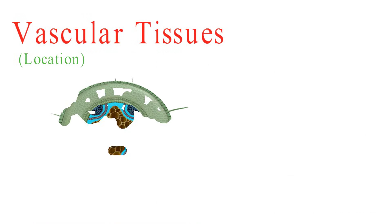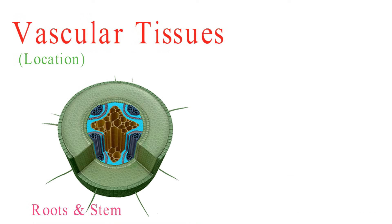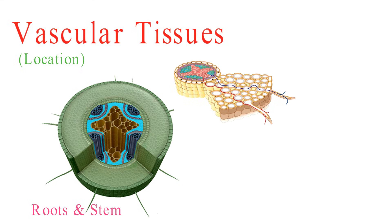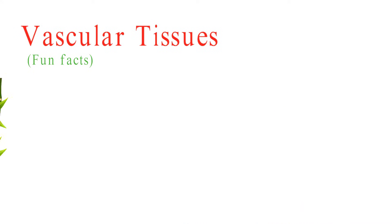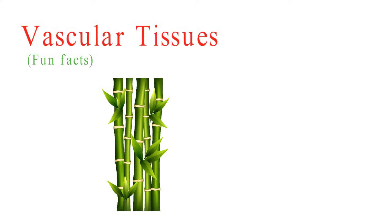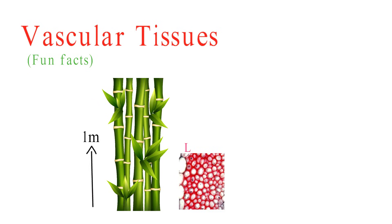Xylem is typically located at the center of the stem and roots. Water and minerals are transported through xylem vessels due to transpiration and cohesion tension mechanisms. In some plants, like bamboo, the vascular bundles are particularly large and efficient. Bamboo can transport water and nutrients at an astonishing rate, which helps it grow rapidly, sometimes up to 1 meter per day.